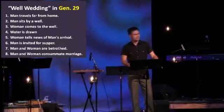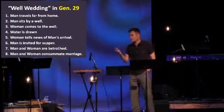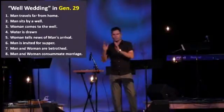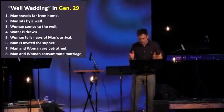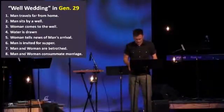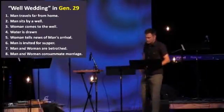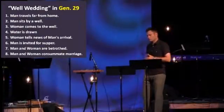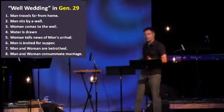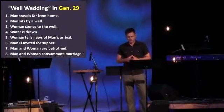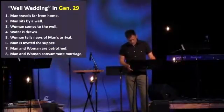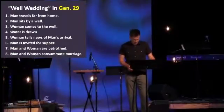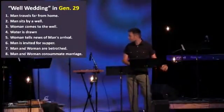If this is really a type scene in that culture, we might expect to see this literary formula repeat again and again. Let's turn to Genesis chapter 29. The context is that Jacob — Isaac's son — is running away from his red-headed, excessively hairy older brother Esau. Verse 1: 'Jacob continued on his journey and came to the land of the eastern peoples' — plot point one, a man is far from home. Verse 2: 'He saw a well in the open country' — number two, man sits by a well. Jacob asked the shepherds where they were from, and they mentioned Laban. 'Here comes his daughter Rachel with the sheep' — number three, woman comes to the well.